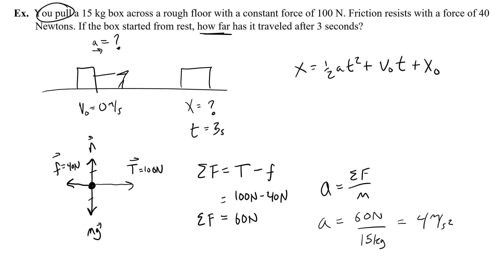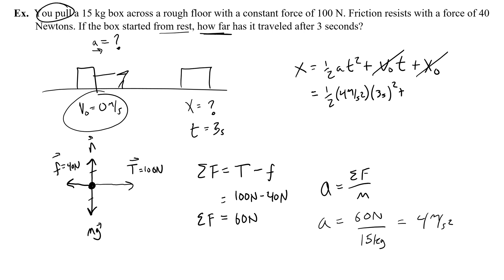With that acceleration, I can solve how far forward the box has gone using the motion equation: x equals one-half times 4 m/s² times (3 seconds)², plus initial velocity — which is zero since it starts from rest — plus initial position, also zero. So x equals 0.5 times 4 times 9, which equals 18 meters. That's how far forward the box has gone.